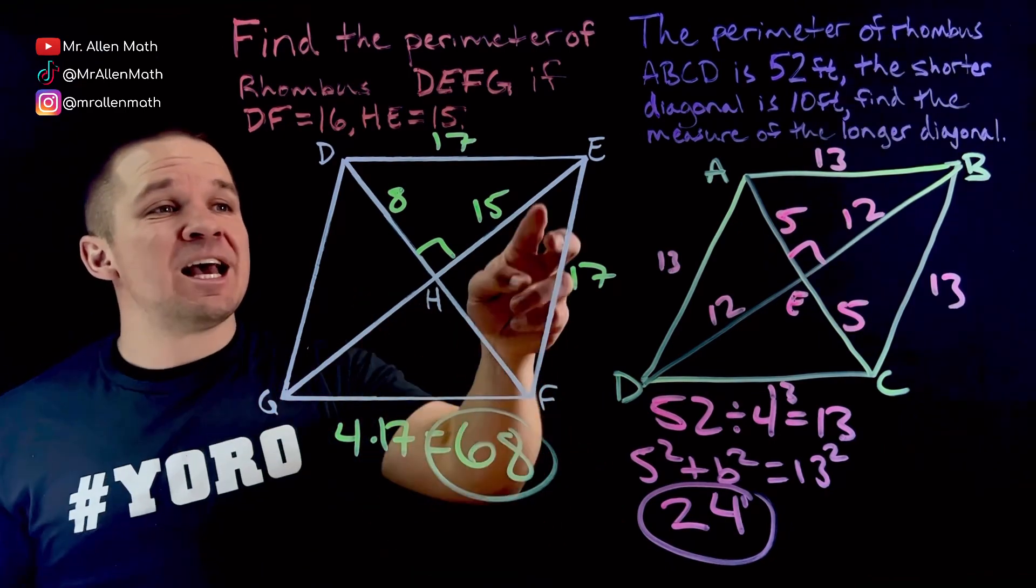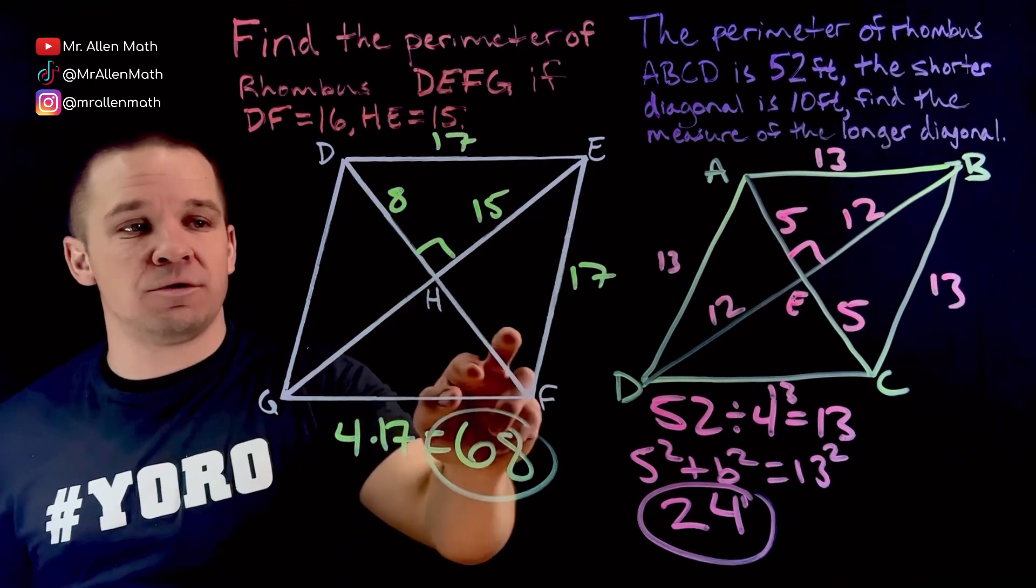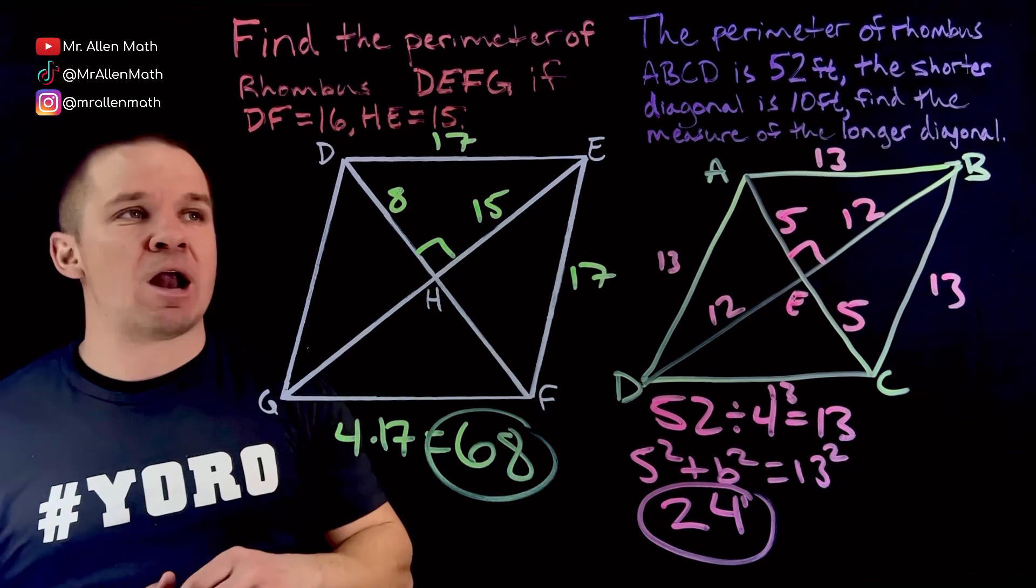Another fun fact that we did not use is that the diagonals bisect our angles. So these two guys are congruent. Those two are congruent. Those two, those two, whoo. A lot of good stuff going on in the rhombus.